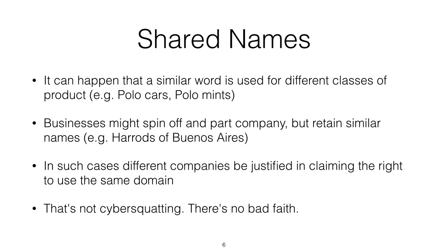It can happen that a similar word is used for different classes of product. Classes here is the technical term used in trademark law — when you register a trademark you register it for a particular group of products, you don't register your trademark for all things. So we have Polo cars and we have Polo mints, and if the company that made the mints registered polo.com, the company that owns the car trademark couldn't really complain that much.